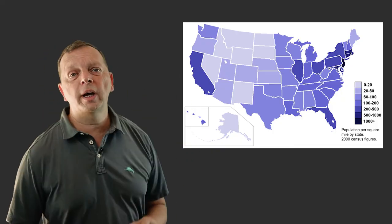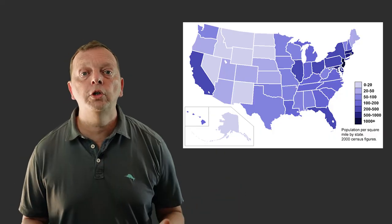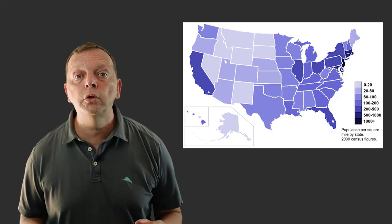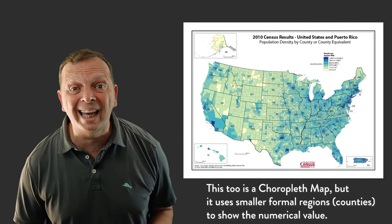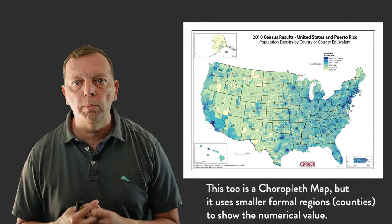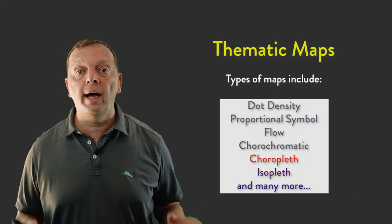But a choropleth map using a larger political boundary, such as states, may not give the level of detail that a geographer really needs. For example, this map here shows that all Texas has the same population density, which we know is not true. So a geographer might use a map that uses smaller areas, such as this map that shows the population densities by county. This gives you much, much more detail on what you're trying to look at.